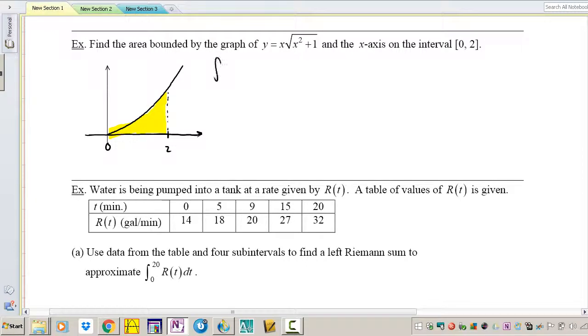So what do we need to do? Let's write it as an integral, 0 to 2, x times square root of x squared plus 1 dx. This is a u-sub problem. Let u equal x squared plus 1. du/dx is 2x, du over 2 is x dx. That takes care of this x dx part.